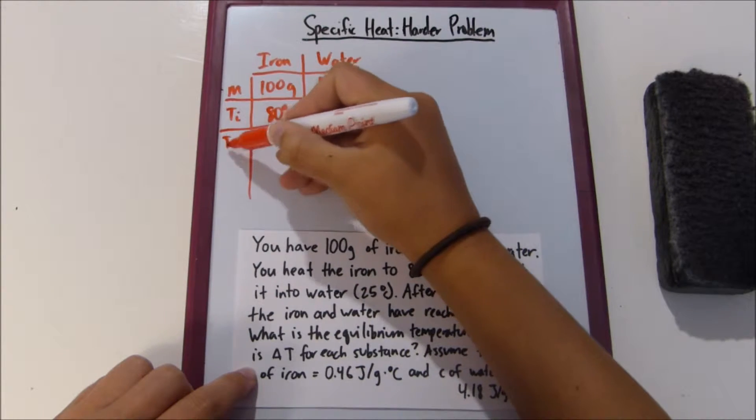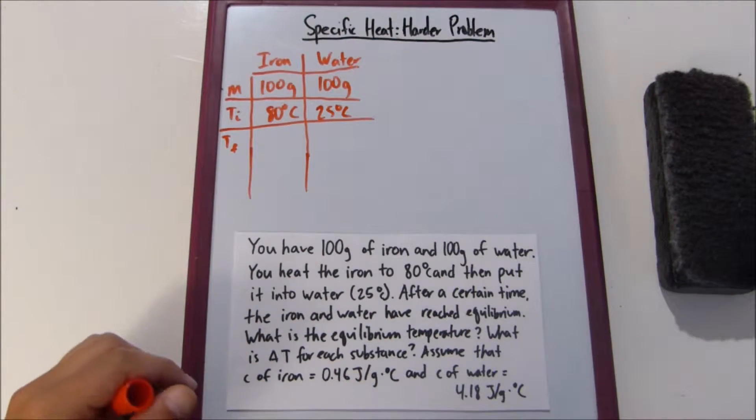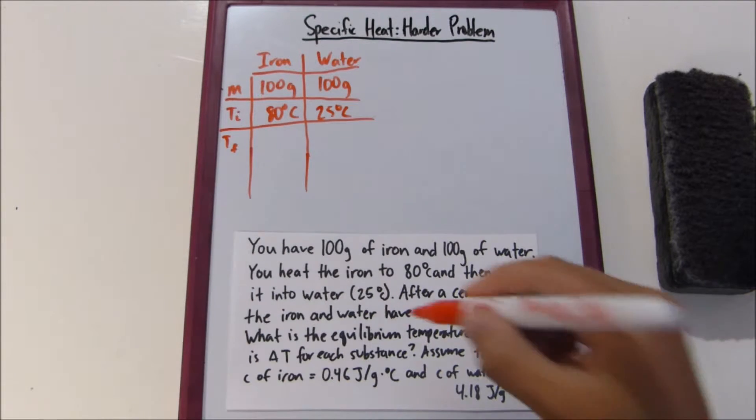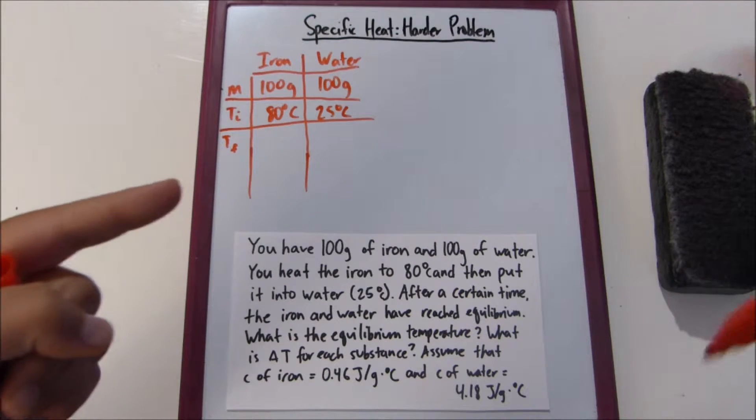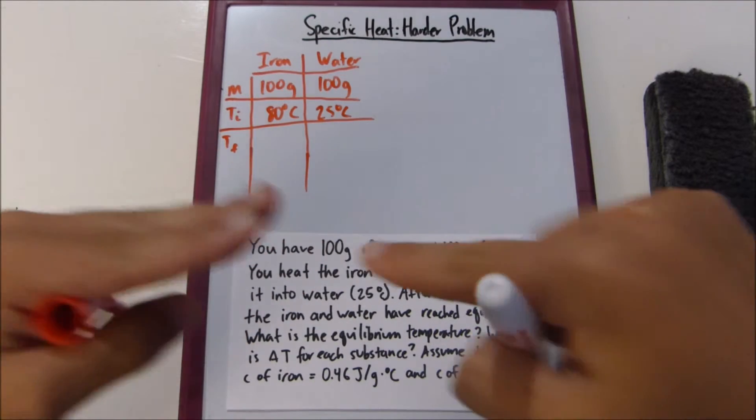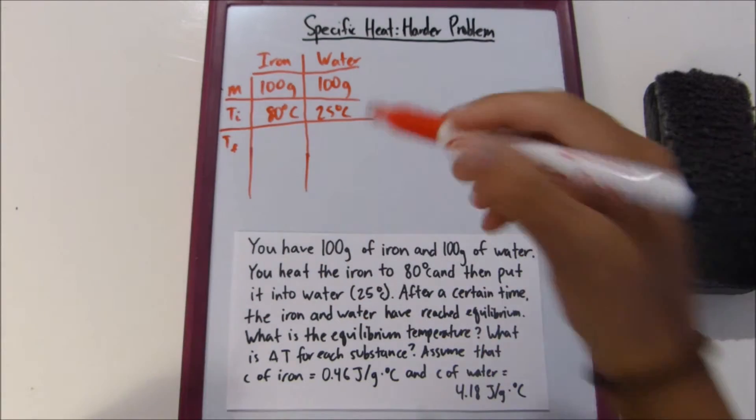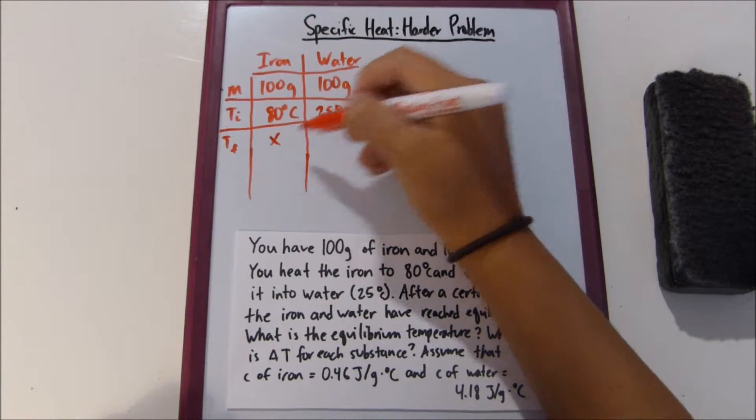Now, temperature final is going to be the same for both iron and water. That will be our equilibrium temperature, because equilibrium is the point at which the iron and the water have the same temperature, so there's no more energy transfer. So we don't know what this is yet, so we'll just call that X.